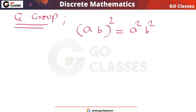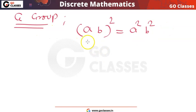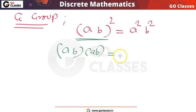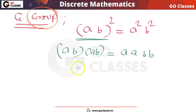We can apply this property here. G is a group and the property (ab)² = a²b² is satisfied. Now, (ab)² means ab·ab, and a²b² means a·a·b·b. So we have ab·ab = a·a·b·b. We can now apply the associative property, since every group is associative.